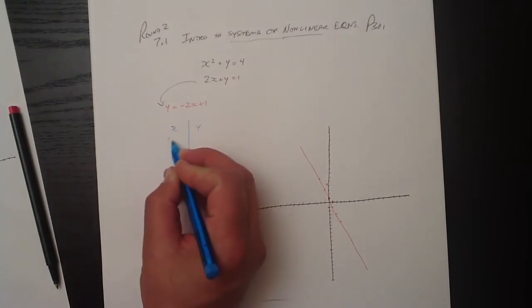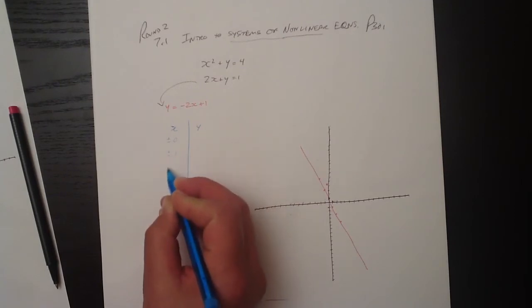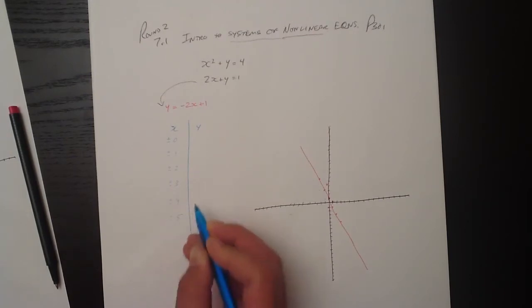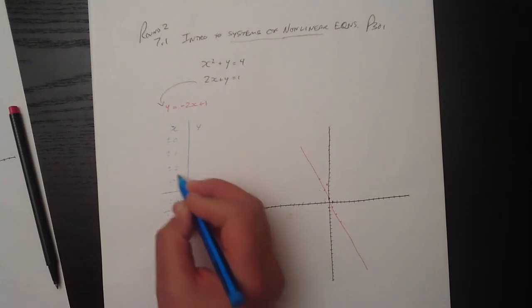So let's just start at the bottom. Plus or minus 0, plus or minus 1, plus or minus 2, plus or minus 3, plus or minus 4, plus or minus 5. And each one of these will give us two different coordinates.